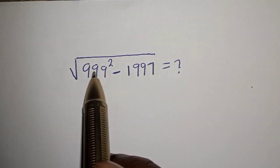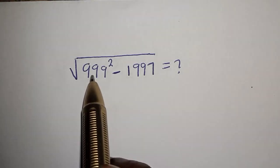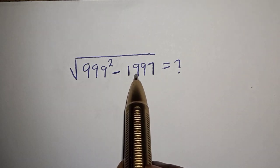Hello, how to evaluate this nice radical problem: square root of 999 squared minus 1997.